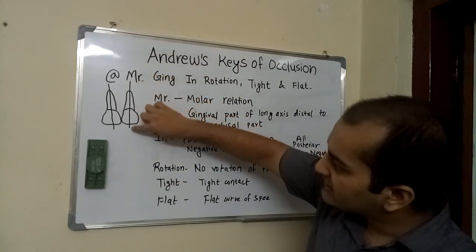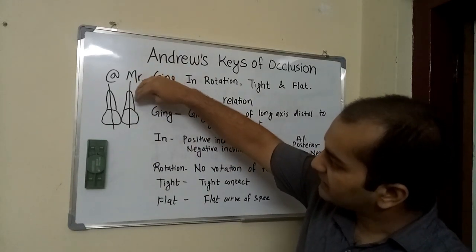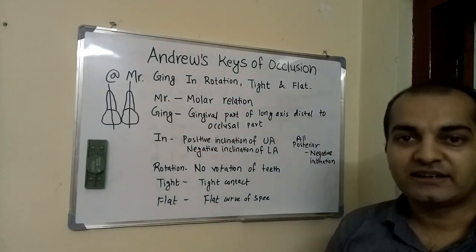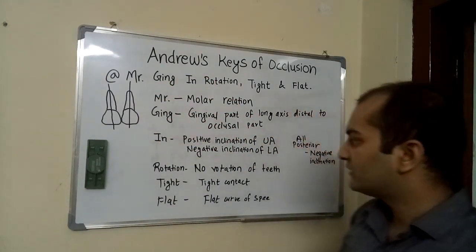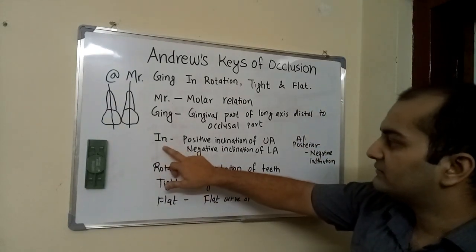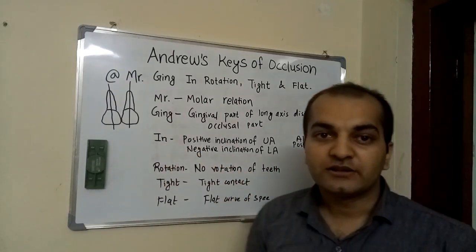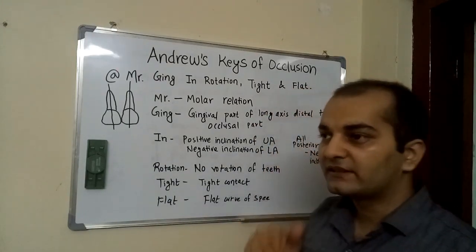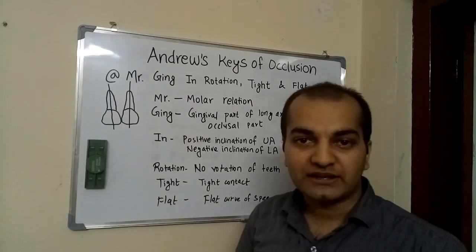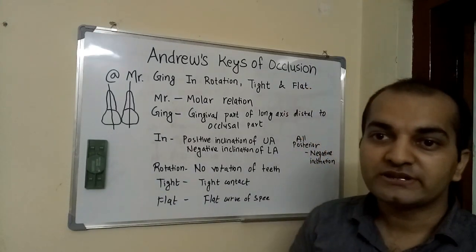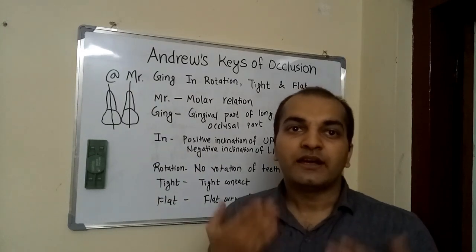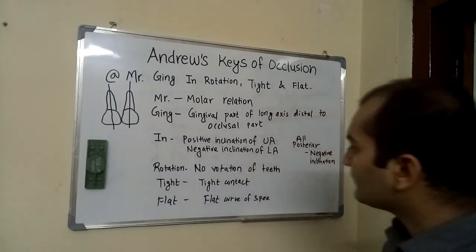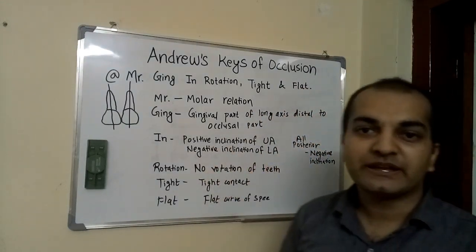This is the long axis of the tooth and its gingival part should be slightly distal to the occlusal part — that is the second key of occlusion according to Andrews. IN signifies inclination: the crown inclination in the upper anteriors is slightly positive, whereas the lower anteriors show negative inclination, and all the posteriors, both upper and lower, show slight negative inclination.